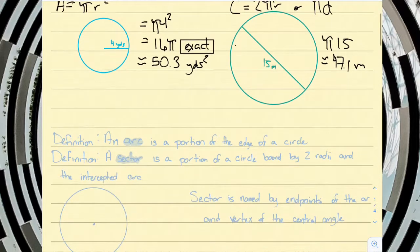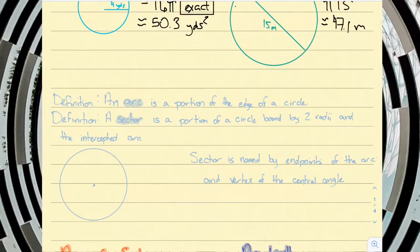Now a couple of definitions. An arc is a portion of the edge of a circle. A sector is a portion of a circle bound by two radii and an intercepted arc. So I'll draw what that looks like. I've got one radius and another radius, and then the arc that is intercepted. So these three figures form our sector. A sector is really just a wedge. Think a slice of pizza or a slice of cake.